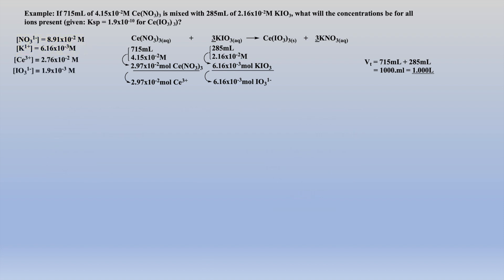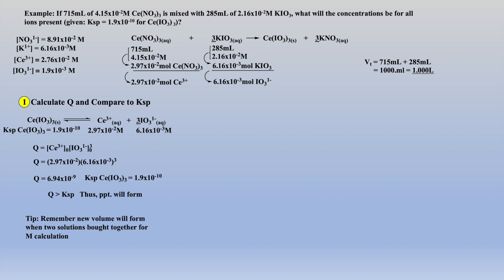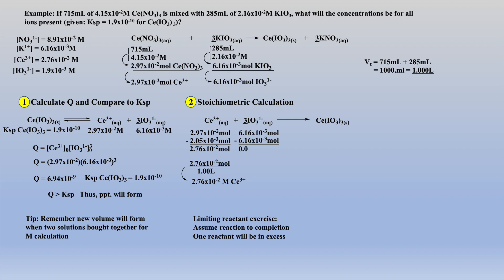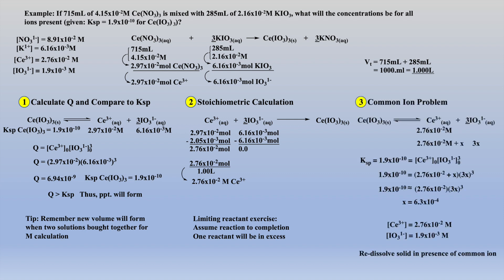Let's review our problem-solving strategy. First, calculate Q and compare to the given Ksp. In most cases, Q will be larger than Ksp. Also, remember to use the new volume total when calculating the molarities of ions within your Q calculation. Second, assume the reaction goes to completion — the same as a limiting reaction problem where one reactant will be consumed and one will be in excess. Remember, when moles or millimoles of the reactant in excess is calculated, divide by the volume total to afford the molarity of the reactant in excess. Last, have the solid re-dissolve in the presence of the ion in excess, which is now similar to a simple common ion problem.